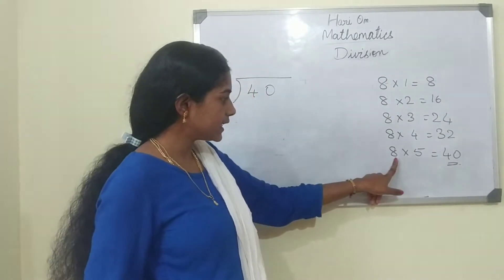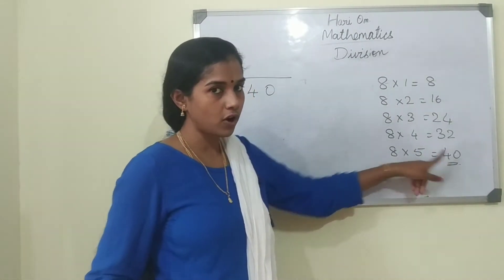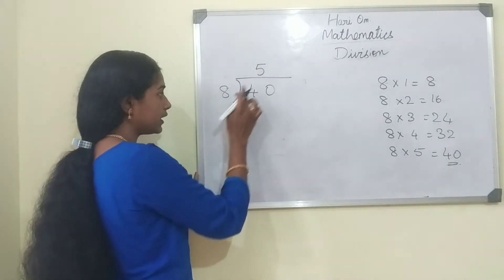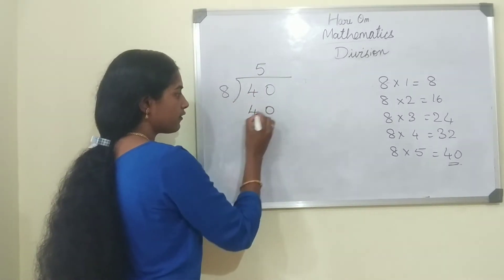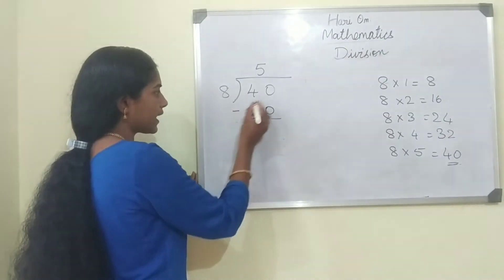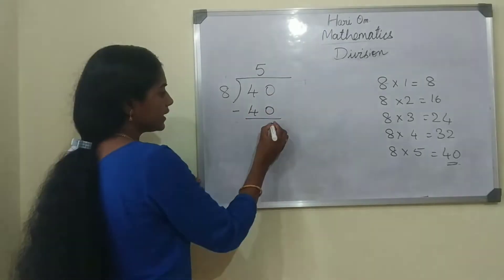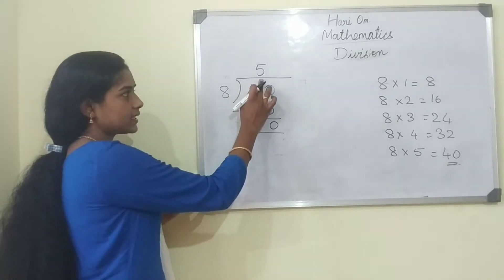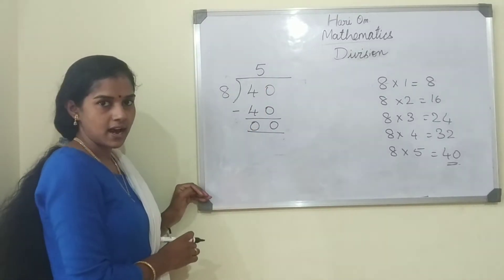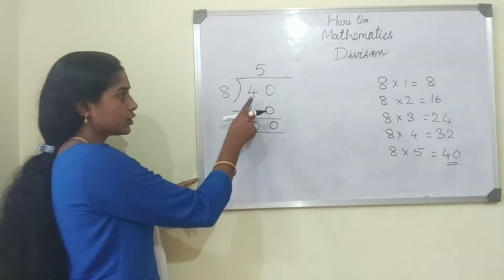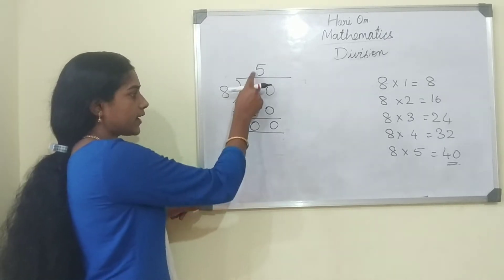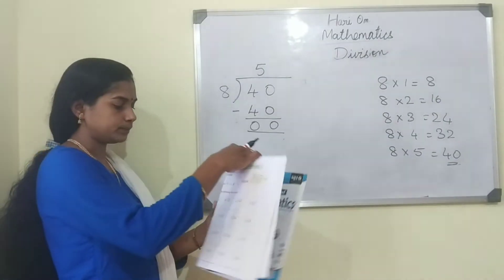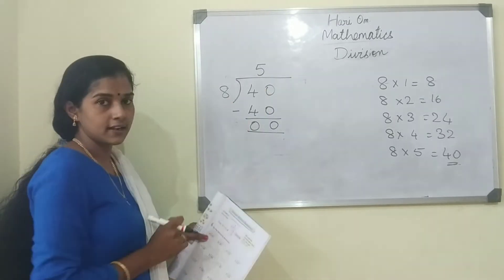8 how much are 40? It is 8 fives are 40. So we are going to write the number 5 over here. 8 fives are 40, now we are going to subtract: 0 minus 0 is 0, 4 minus 4 is 0. So 40 divided by 8 — 8 fives are 40, 40 minus 40 is 0 — the answer is 5.